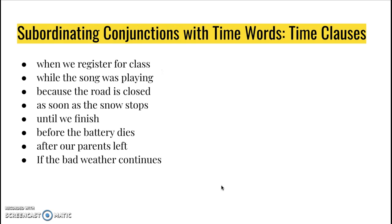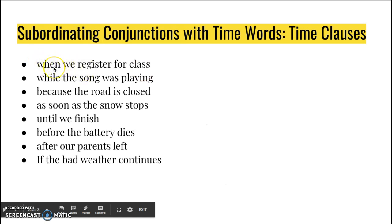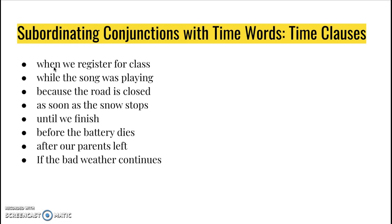Subordinating conjunctions are often time words, so time words are subordinating conjunctions that talk about time. 'When we register for a class' — 'when' is a time word, yes. 'While' — does it talk about when things happen? Yes. 'Because'? No, because it's not about time; it's about cause and effect.